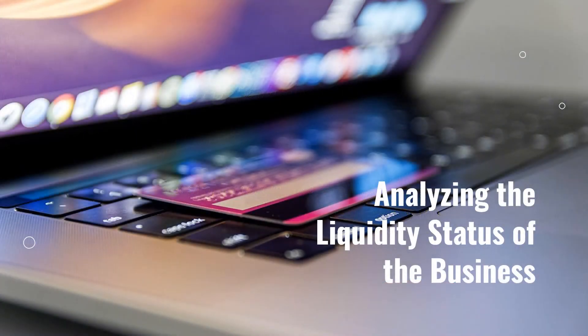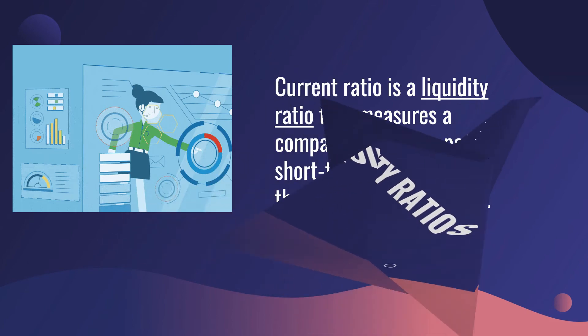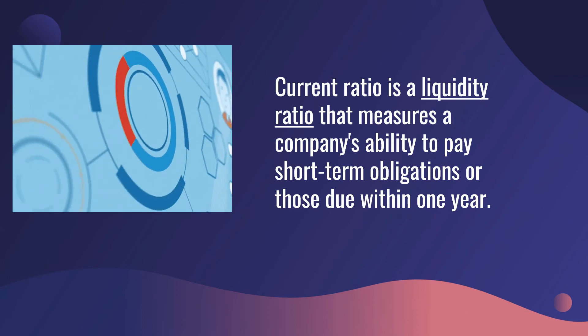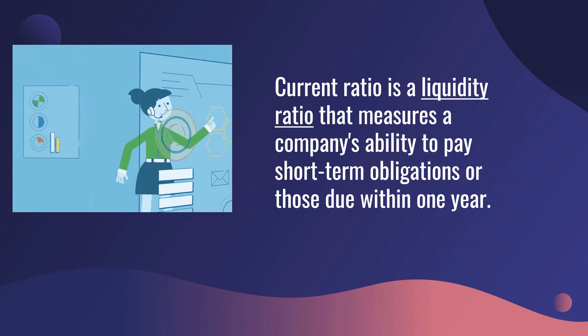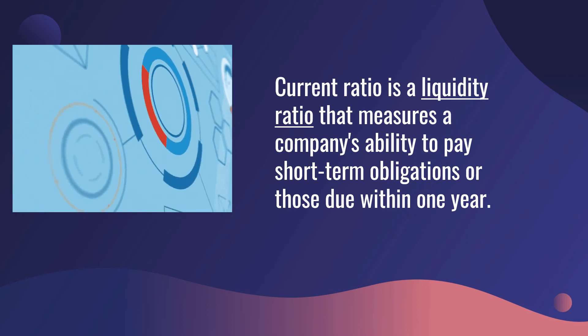Next, we analyze the liquidity status of the business. Recall that liquidity ratios are an important class of financial metrics used to determine a debtor's ability to pay off current debt obligations without raising external capital. In computing liquidity ratios, the current ratio is a liquidity ratio that measures a company's ability to pay short-term obligations — those due within one year.